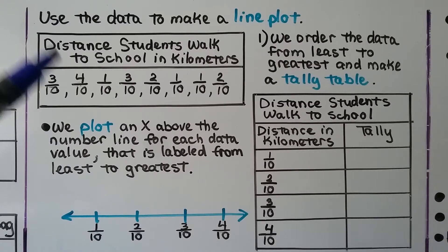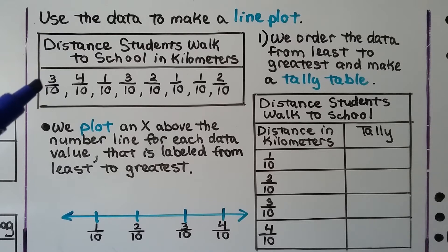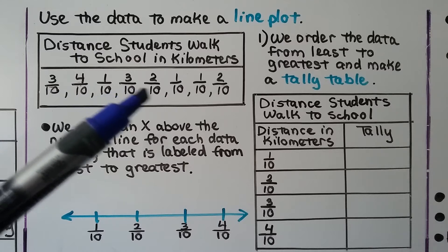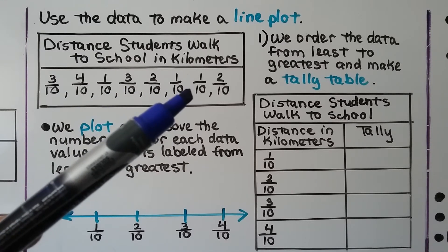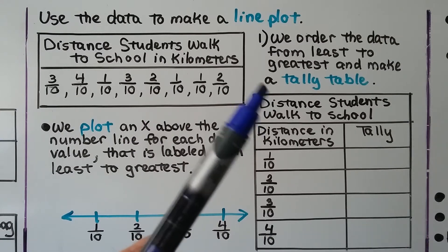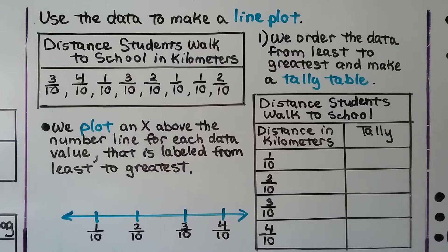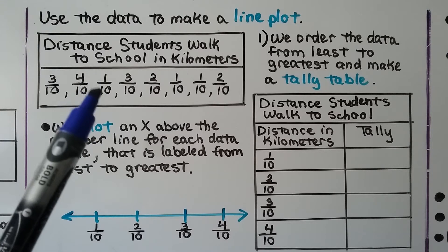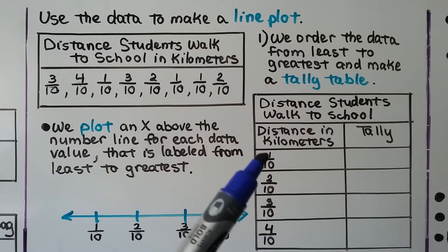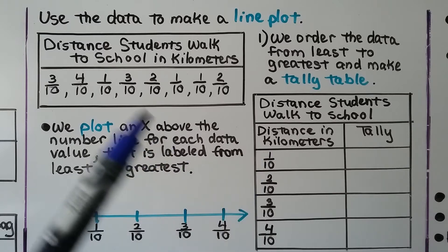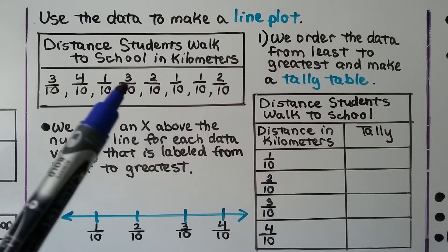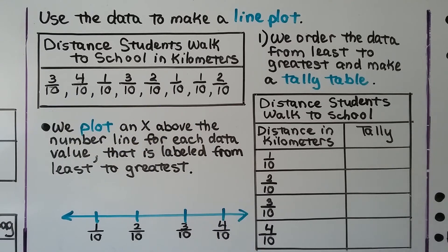The next problem tells us to use the data to make a line plot for distance students walk to school in kilometers. We have: three-tenths, four-tenths, one-tenth, another three-tenths, two-tenths, one-tenth again, another one-tenth, and two-tenths. The first thing we do is order the data from least to greatest and make a tally table. One-tenth would be the least, so that's first, then two-tenths, then three-tenths, and four-tenths is the greatest.